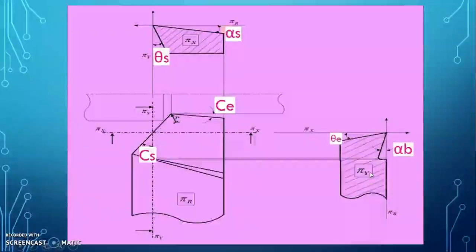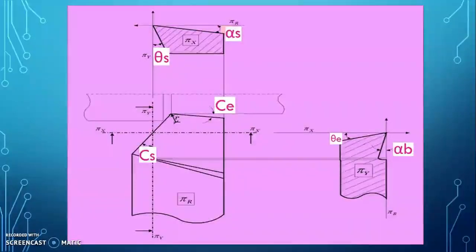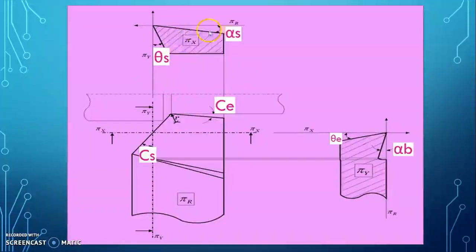These three planes define the geometry of the major flank, minor flank, and cutting edges. We can understand the different angles measured with the help of the three reference planes. The first rake angle is in the longitudinal plane, known as the side rake angle, denoted by alpha-ys.